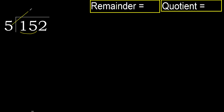With 15, which number multiplied by 5 is nearest to 15 but not greater? 5 multiplied by 4 is 20 — 20 is greater. 5 multiplied by 3 is 15 — 15 is not greater, ok.